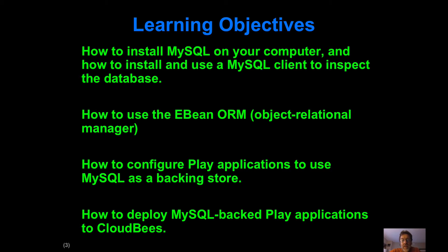We're also going to be using the eBean object-relational manager, which is the mechanism we can use to simplify the mapping of Java objects to rows in the underlying table. It doesn't require learning a lot of new techniques and syntax, though it's not a simple thing to do. In addition to understanding the eBean ORM, there are the mechanics of connecting a Play application to an underlying MySQL database.